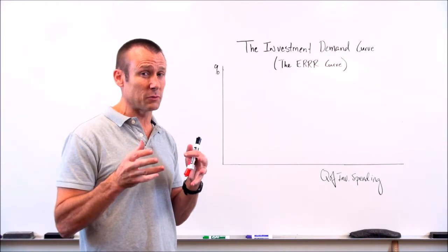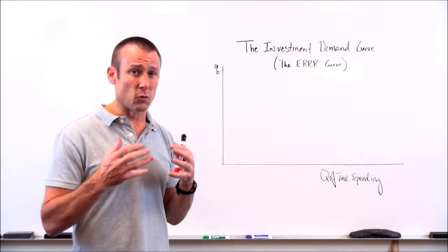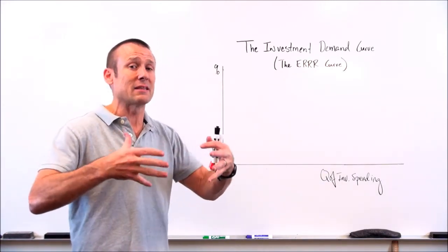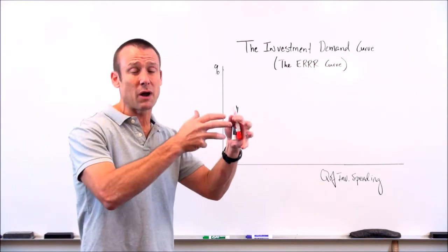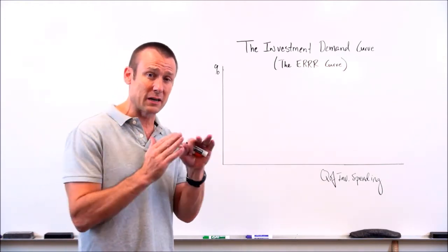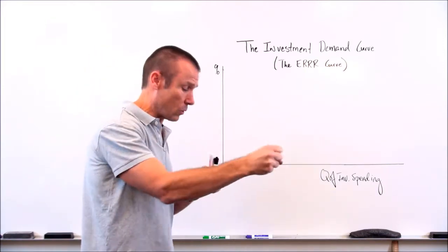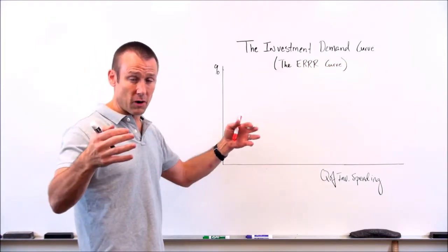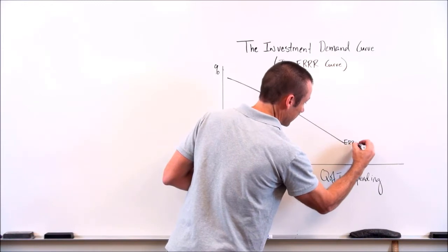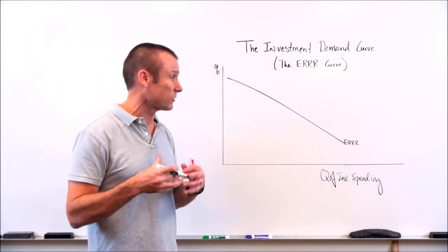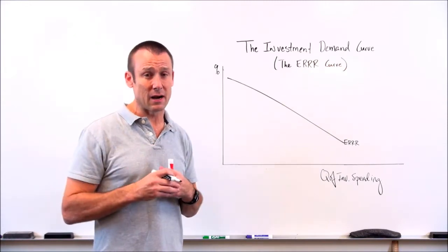I want to remind you: what is the investment demand curve based on? It's based on the expected real rate of return of business projects. The way I like students to think about how we get the investment demand curve is to first think about graphing the expected real rate of return of business projects onto a graph, putting those projects in descending order — from the highest expected real rate of return to the lowest. So if we look at all our projects, we get a curve that looks like this — that is my ER curve, my expected real rate of return of business projects curve. It simply represents the expected real rate of return of all projects in the entire economy.